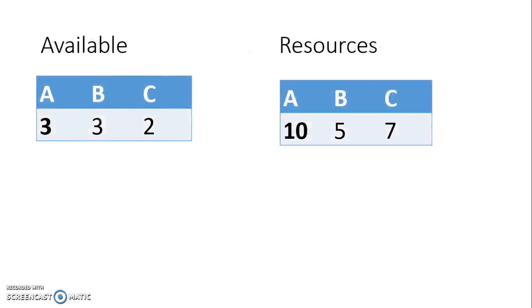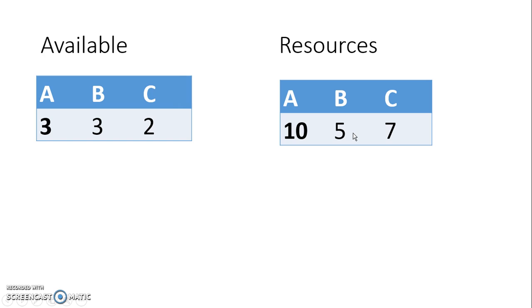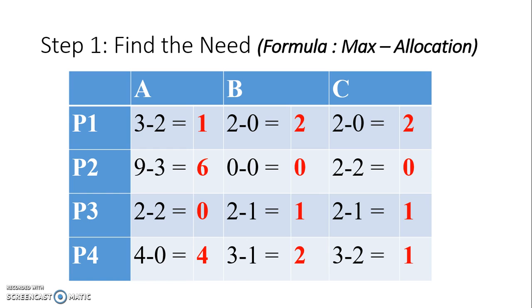From the timetable, for resource A, P1 Max minus P1 Allocation, that is 2. Here we are going to see the calculation for each step. 3 minus 2 equals 1, 6, 0, 4, 2, 0, 1, 2, 2, 0, 1, 1. This is the answer for the needs timetable.